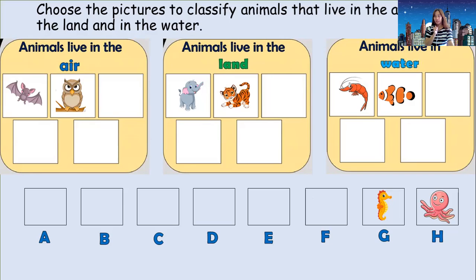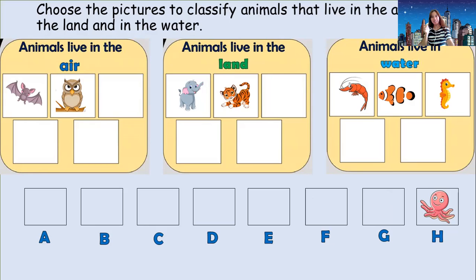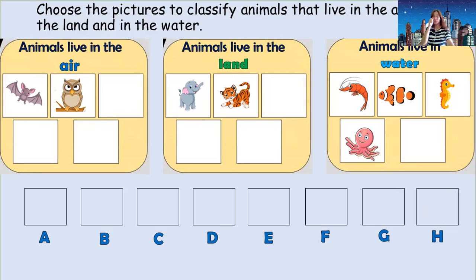How about picture G? It looks like a horse — what is that? Seahorse — very good! Okay, where is the habitat of the seahorse? In the water. Are you sure? Okay, let's check — very good, seahorse lives in the water! Okay, last picture — picture H. What is that? An octopus — very good! Okay, where is the habitat of the octopus? In the water. Are you sure? Let's check — very good, octopus lives in the water! Good job, students!